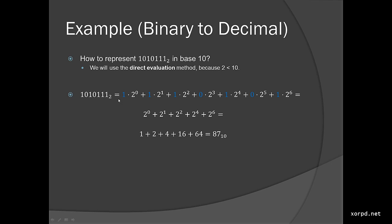We just evaluate the number according to the definition. We begin from the lowest digit — at least that's how I like to do it — just to make sure that I get the calculation right. We just multiply every digit by its weight, its relative weight in the number. So the weight of the first bit, which is 1, is 2 to the 0. We just calculate 1 times 2 to the 0, plus 1 times 2 to the 1st, plus 1 times 2 to the 2nd, and so on. We calculate it the usual way in base 10 and we get a result in base 10. This kind of calculation is pretty easy because we know how to do this in base 10.